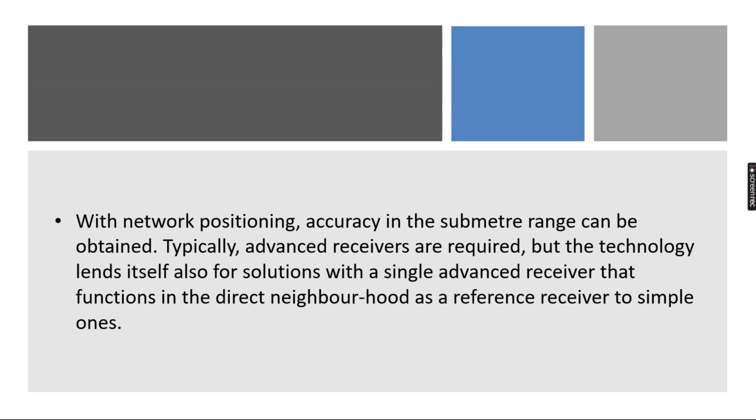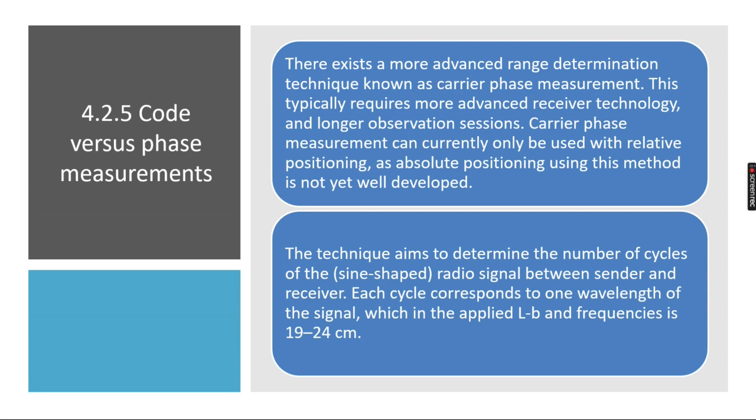With network positioning, accuracy in the sub-meter range can be obtained. Typically advanced receivers are required, but the technology solution can be obtained by using a single advanced receiver that directly functions in the neighborhood. We can use code versus phase measurements.